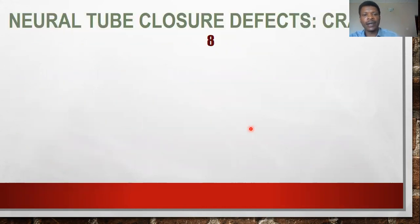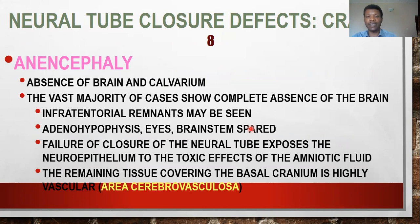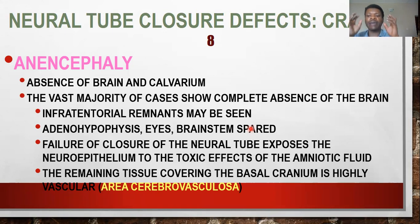If the neural tube fails to close, it results in neural tube defects. When the cranial neural field fails to close, we have anencephaly — no formation of the brain. You see absence of the cerebral hemispheres and even the calvaria. Intracerebral remnants may be seen, and you could find the anterior pituitary gland. The eyes, the brain stem — those things may be spared, but the cerebral hemispheres proper would be absent. The neuroepithelium may still be present or absent due to toxins.